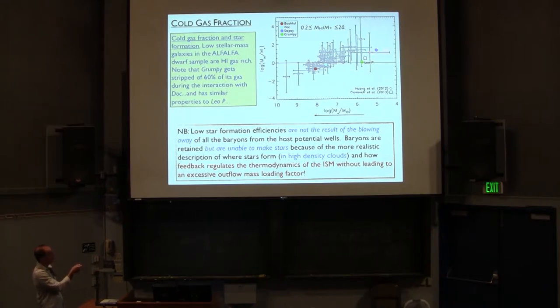So there is still a lot of H1 in those systems. It's just not able to form stars because that gas is not cooling down to low temperature and high densities, like 100 particles per cubic centimeter or so. So baryons are retained in these systems. They're not blowing away all the baryons, or blowing out all the baryons from the system themselves. They are retained into those systems, but it's just they never get down to those high densities, and so the star formation efficiencies are relatively low.